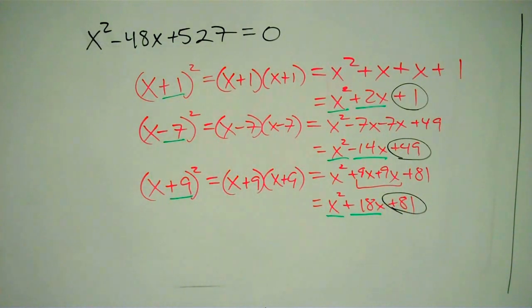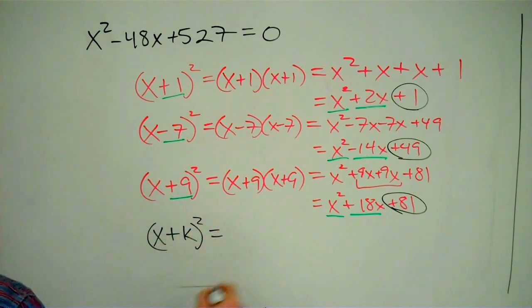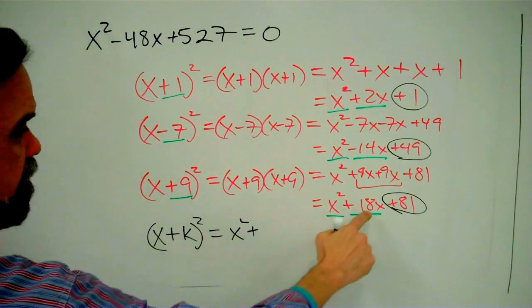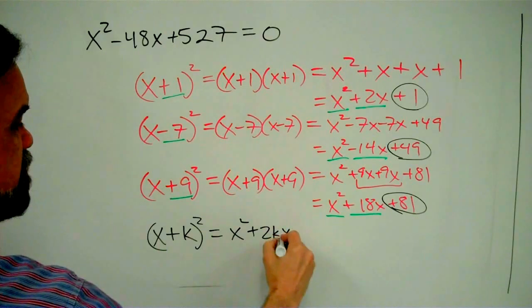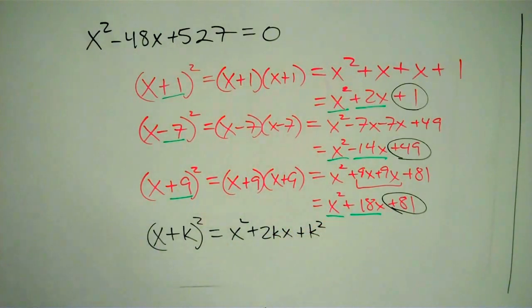So I can make a generalization. That generalization is, if I have (x + k)², that's going to be x² plus—remember what happens here? We double that number—2kx + k². Remember that pattern. This is going to be a really important pattern as we go forward.